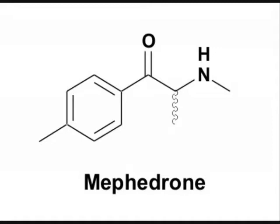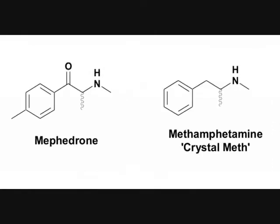Looking at the structure of Mephedrone, it's really very similar in structure to crystal meth, a well-known drug. Let's take a look at the structure of crystal meth and compare it to the structure of Mephedrone. As you'll see, crystal meth simply has a methyl group missing from the aromatic ring and it has no carbonyl group.